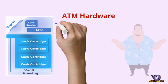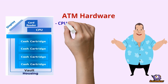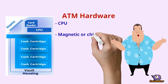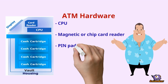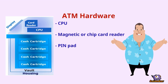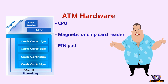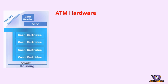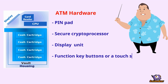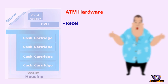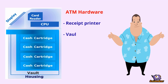An ATM is typically made up of the following devices: a CPU to control the user interface and transaction devices; a magnetic or chip card reader to identify the customer; a PIN pad for accepting and encrypting the personal identification number (PIN); a secure crypto processor; a display unit; function keys or a touch screen used to select the various aspects of the transaction; a receipt printer; vault; housing; sensors; and indicators.